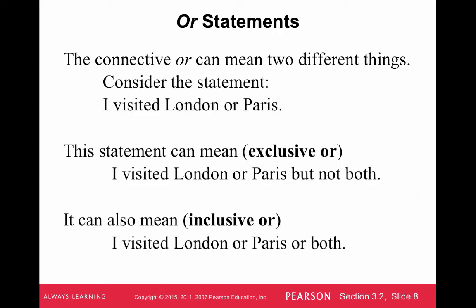The connective or can mean two different things. For example, 'I visited London or Paris' can mean an exclusive or — London or Paris but not both — or it can mean the inclusive or. For us in this chapter and for the rest of the class, or will always mean the inclusive or. It could mean that you did both. We're never going to use the exclusive or — or always gives the possibility that you could do both.